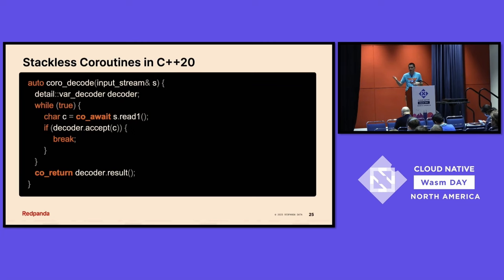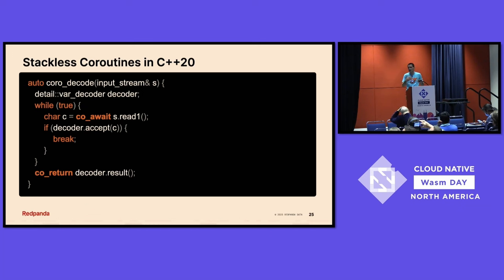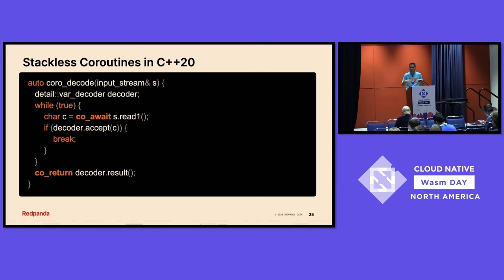Any long computations need to be broken up to prevent blocking I/O from happening on other workloads and ensure shared scheduling and fairness. We heavily use stackless coroutines. For us, our budget for executing a single task is about half a millisecond — 500 microseconds is our policy for how long a task should run before it needs to yield control. Stackless coroutines in C++20 are a really nice programming model for this. Here's a simple example: instead of blocking I/O with a while loop that eats the thread, we use coroutines. The co_await keyword inserts a scheduling point and tells the Seastar scheduler not to resume this code until the event has finished.